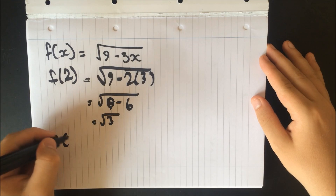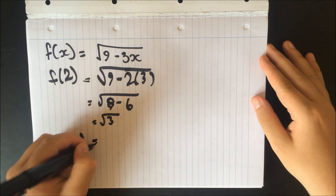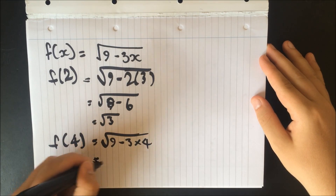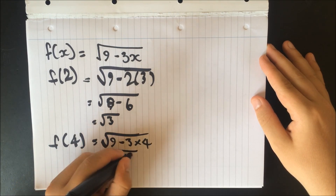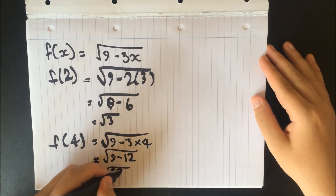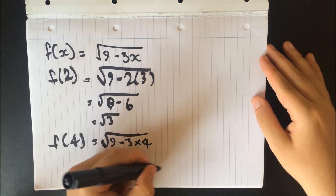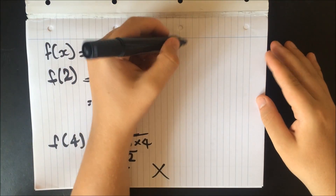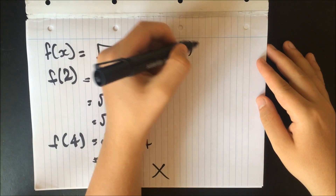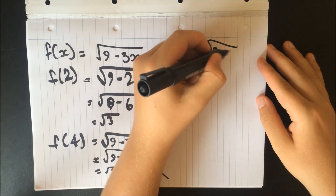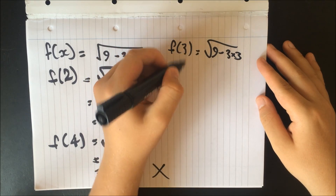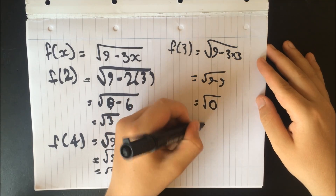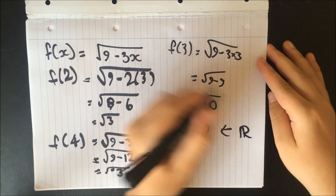However, if we were to do the function of 4, that would be 9 minus 3 times 4, which is the square root of 9 minus 12, which is the square root of minus 3. That is not a real value, so we can't have that. But if we do the function of 3, that's 9 minus 9, which is 0, and that is a real value.